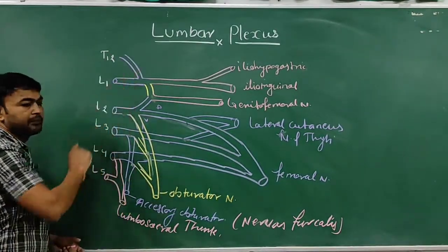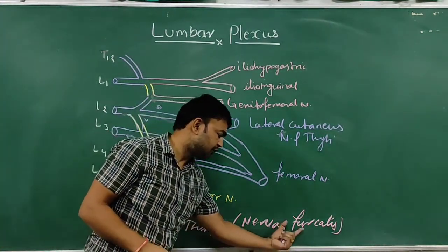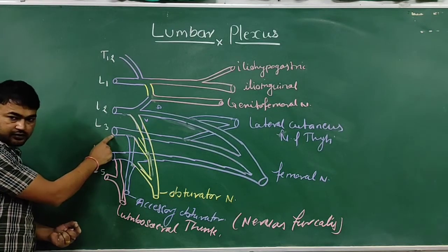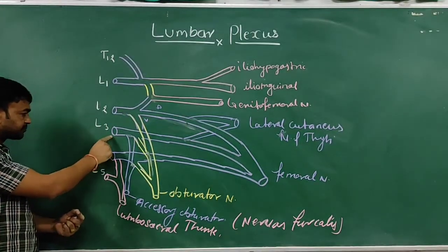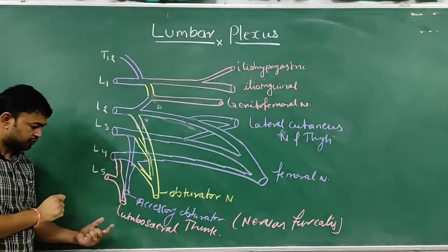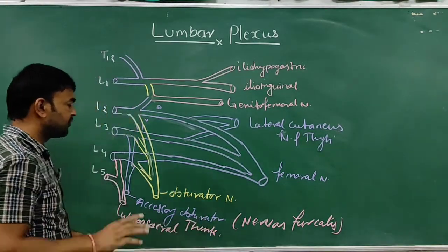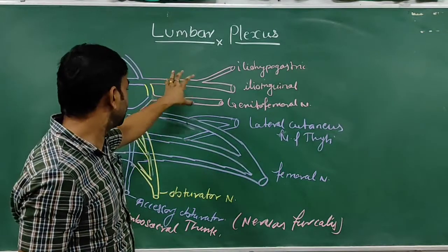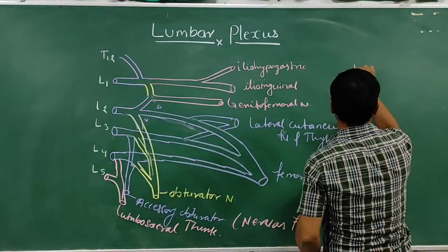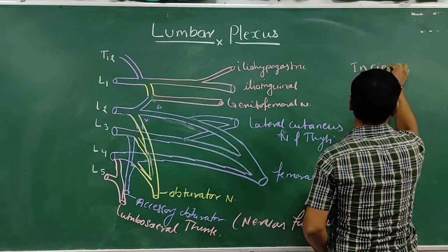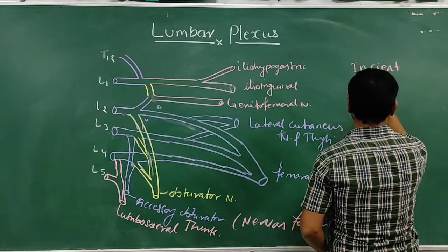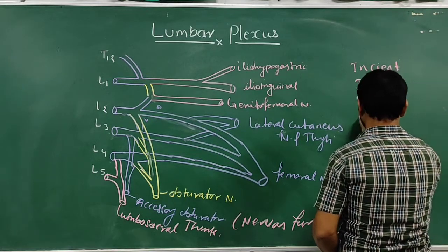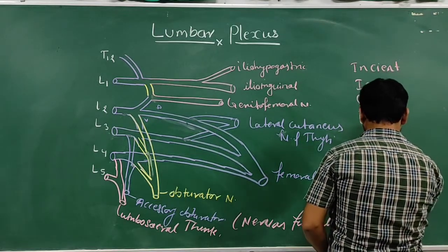The nervus furcalis connects the lumbar plexus to the sacral plexus. The lumbosacral trunk may sometimes originate from L3 and L4. Now, the mnemonic for remembering the branches of the lumbar plexus is: 'Incident Ion Gates Late On Friday.'